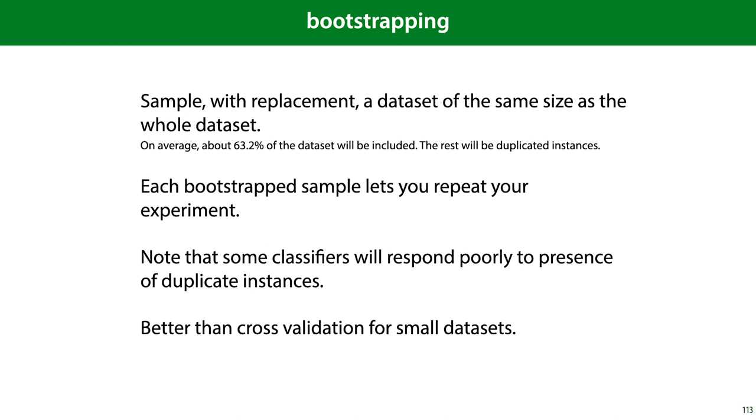Another approach is bootstrapping. In bootstrapping, we sample with replacement a dataset of the same size as the whole dataset. This means that, on average, about 63% of the dataset will be included, and the rest will be duplicated instances in our new resampled data. Each bootstrapped sample then lets us repeat our experiment as though we had resampled a fresh new dataset. And this allows us to report spread under the randomness created by the data sampling process.